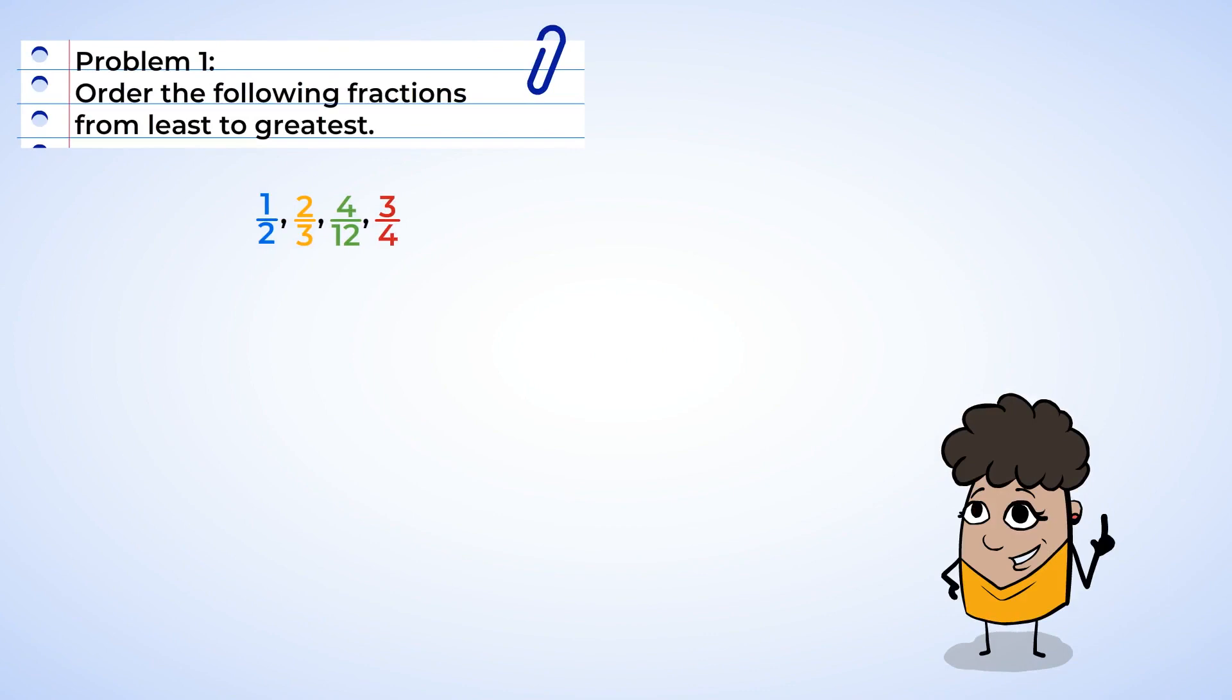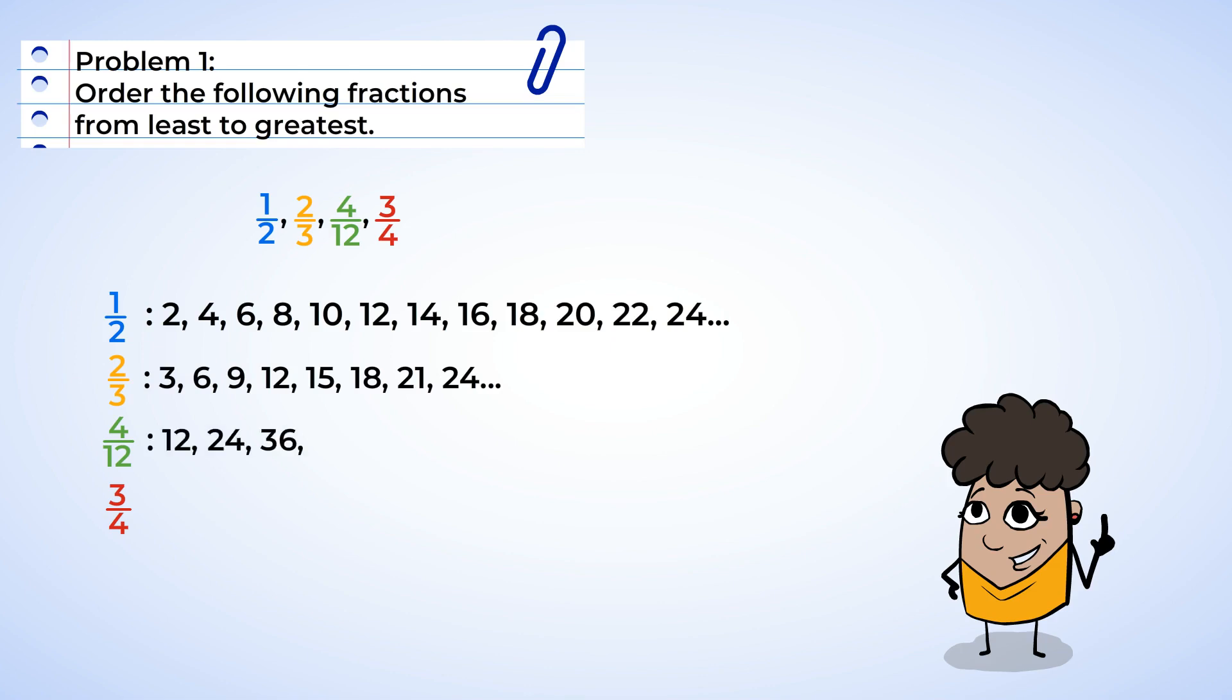Let's list some of the multiples of the denominators. 2, 4, 6, 8, 10, 12, 14, 16, 18, 20, 22, 24. 3, 6, 9, 12, 15, 18, 21, 24. 12, 24, 36, 48. And 4, 8, 12, 16, 20, 24, 28.